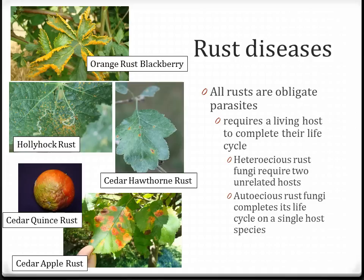Rust diseases are common year to year on specific plants. Orange rust on blackberry is very specific to variety — some blackberries have better resistance than others. Navajo is an example of a blackberry that is very susceptible to orange rust. If you develop this in your blackberry plants, the plant should be removed immediately, because this is a systemic rust fungus and the plant cannot be cured once infected. If you have this in your planting, there need to be preventative sprays on all the unaffected plants.